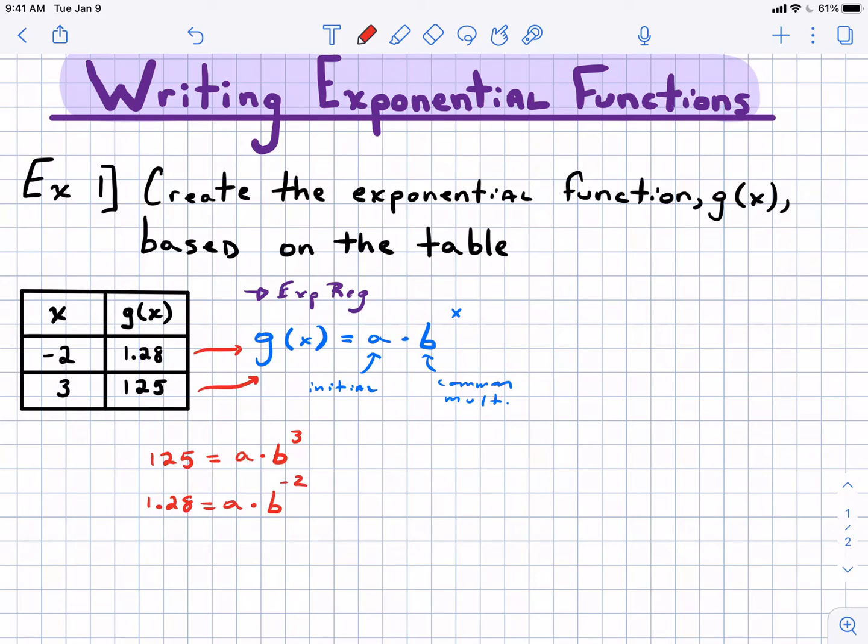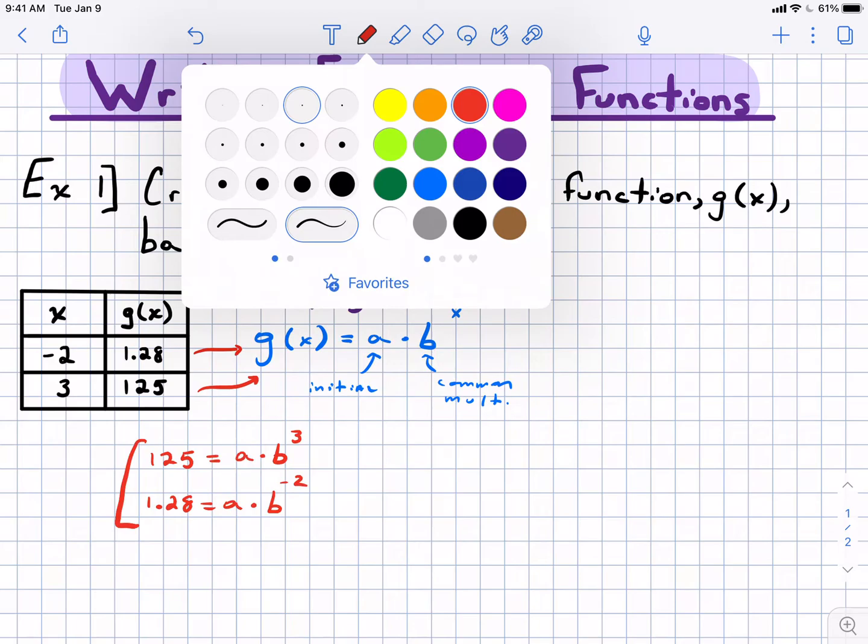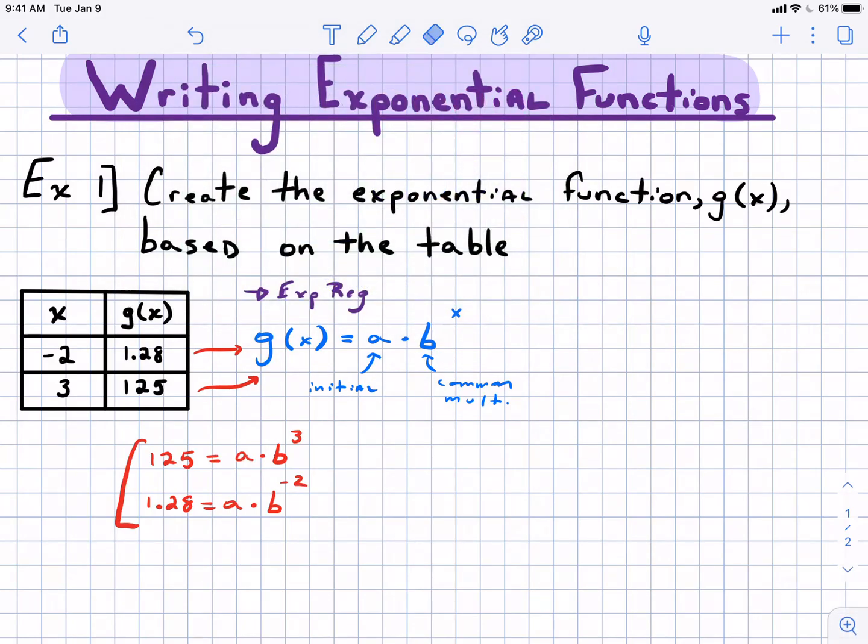So we have a system on our hands now. We have a set of two equations, we have two variables, we can solve this. There's enough information there to solve this. One alone wouldn't be enough information. Now I mentioned a few moments ago that I set this up a certain way. I usually like to put the larger y value on top because what we're actually gonna do here, similar to elimination method when you're solving systems, we're going to divide one equation by the other.